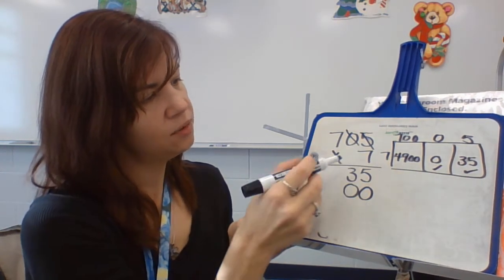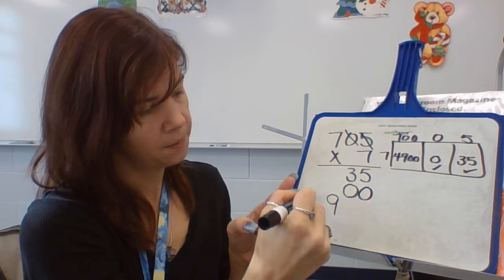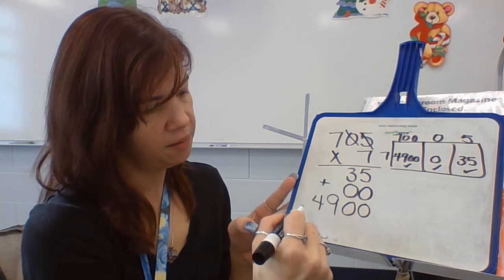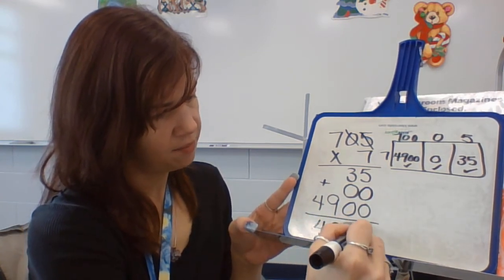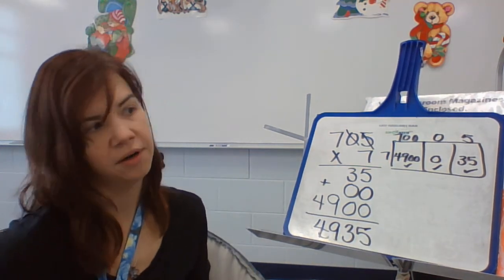And this last one, 7 times 7 is 49. And add in the two zeros. So there's my three numbers. I add them up and get 4,935.